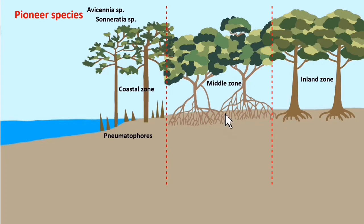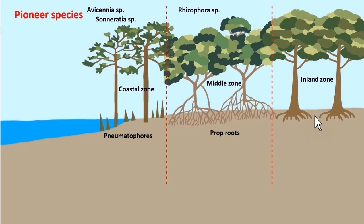The middle zone is situated along the river, closer to the estuaries. The area is inhabited by Rhizophora species, plants that have tangled prop roots. The inland zone is situated further into the land and is inhabited by Bruguiera species, which have buttress roots.